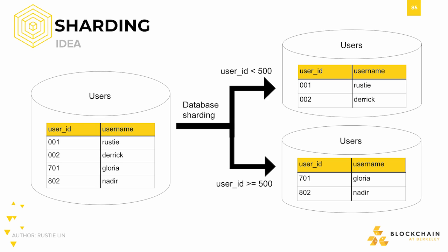It can be arbitrary how we do this, but to approximate load balance, we could shard based on whether a user's ID falls under a certain range of IDs. In this diagram, user IDs less than 500 are stored in the top shard, and user IDs greater than or equal to 500 are stored in the bottom shard. Bridging back to blockchain, currently in all practical blockchain protocols, each full node stores all of the state data and processes all transactions. What we notice is that since each node has to process everything, it creates a scalability bottleneck.